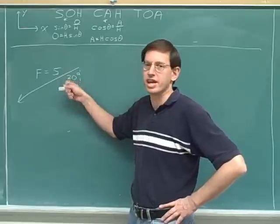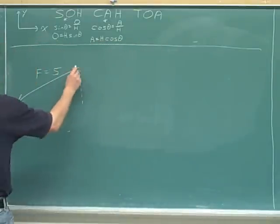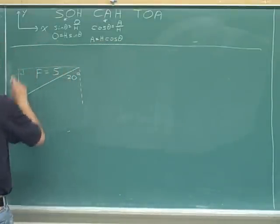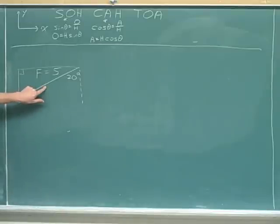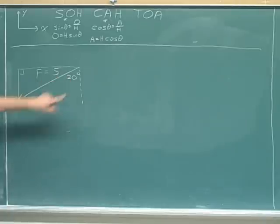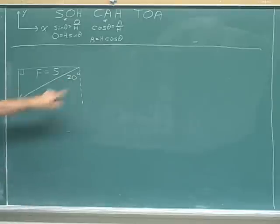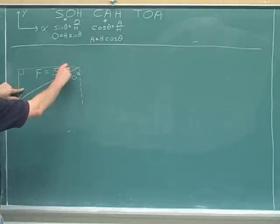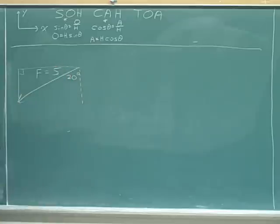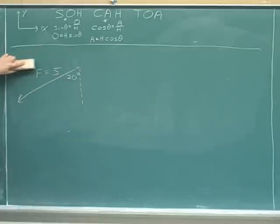We'd like to include this angle in the triangle. The previous right triangle isn't the best we can draw because it doesn't include the angle that we were given. It's more conventional to include the angle you were given. So let's stick with the conventional wisdom and draw the triangle using the angle we were given.